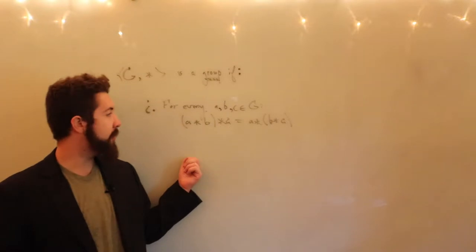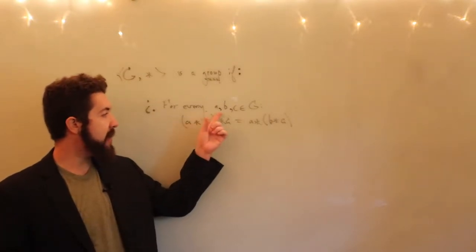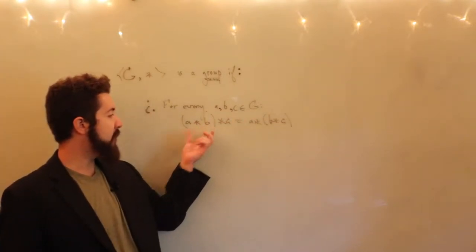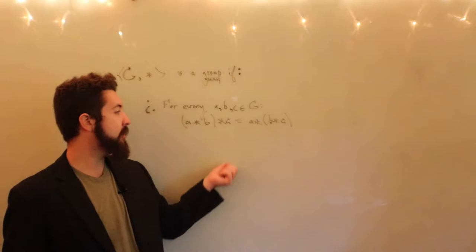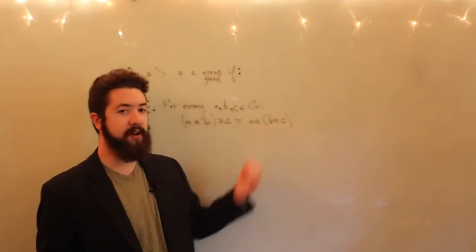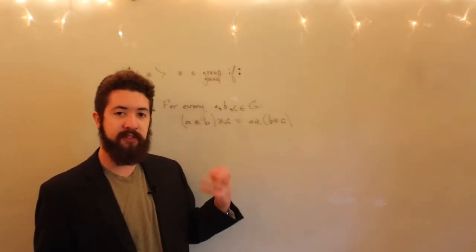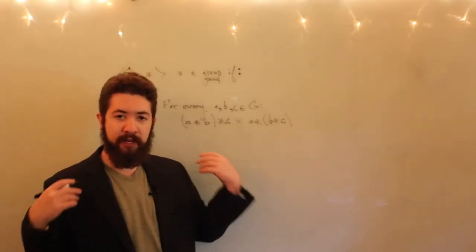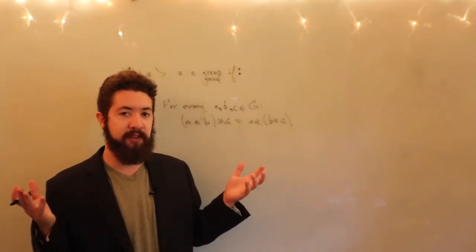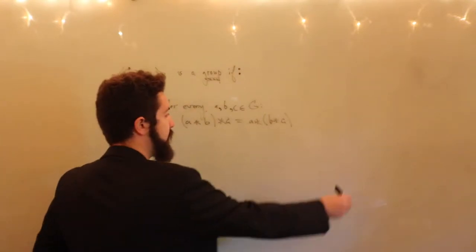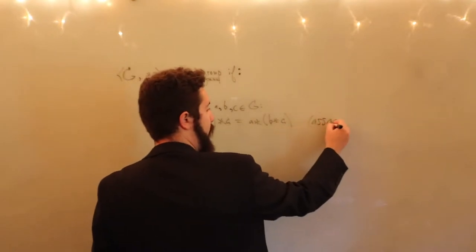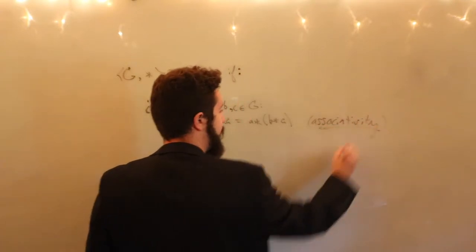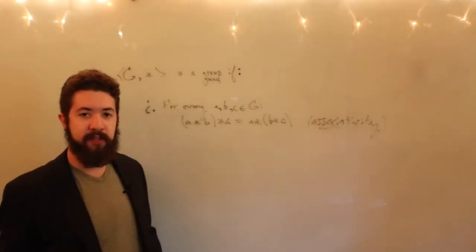The first property: for every A, B, and C elements of the set G, A star (B star C) is equal to (A star B) star C. This is the associative property — we're going to say multiplication, though our operation need not be normal multiplication. So we want associativity of the binary operation. That's property one.